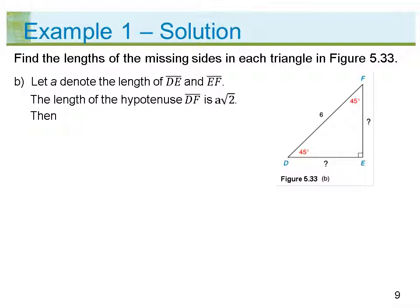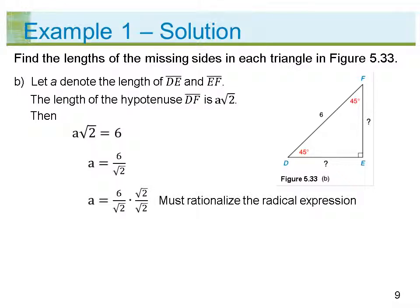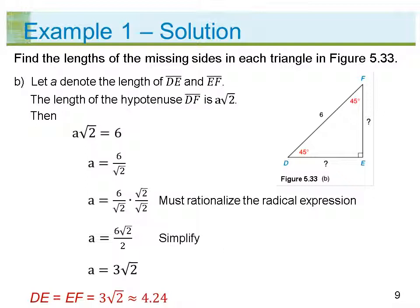Part b: Let a denote the length of segment DE and segment EF. The length of the hypotenuse segment DF is a times the square root of 2. Then a square root of 2 equals 6, so a equals 6 divided by the square root of 2. Multiplying by square root of 2 over square root of 2 to rationalize, a equals 6 square root of 2 divided by 2. Simplifying, a equals 3 square root of 2. Therefore, length DE equals length EF equals 3 square root of 2, which is approximately 4.24.